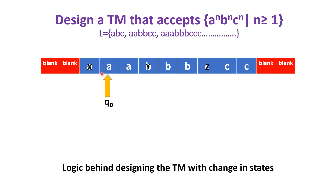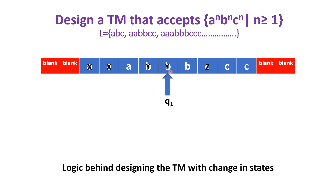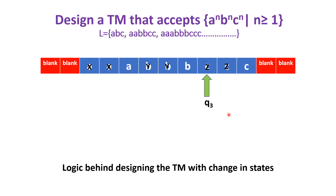A is replaced as X, change the state from Q0 to Q1, and move towards the right. Keep the symbols as they are until we get the first B. On getting the first B, replace B by Y, change the state from Q1 to Q2, and move towards the right until we get the first C. On getting the first C, C is replaced as Z. Change the state from Q2 to Q3 and move towards the left. This completes replacement of the second set of A, B, C into X, Y, Z.